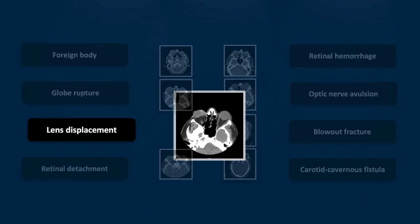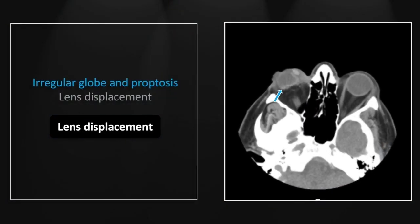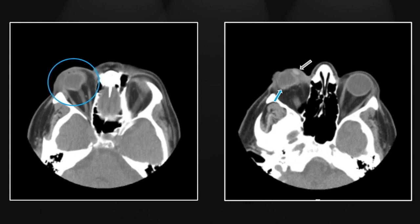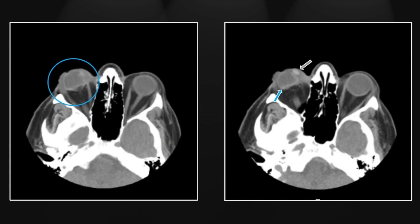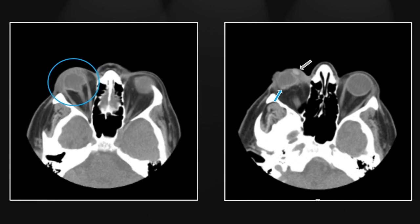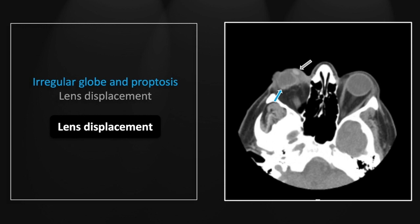Next, an unusual lens displacement. The globe is again irregular and quite clearly ruptured, also somewhat proptotic. Here the lens is displaced externally, lying on the medial anterior aspect of the globe — an unusual case where the lens has flipped outward rather than being displaced posteriorly. Note the irregularity of the globe contour and that displaced lens. That is a case of lens displacement accompanying globe rupture.